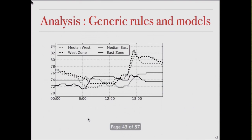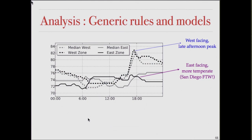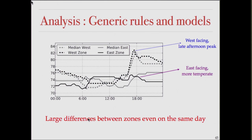A lot of rules and models are expected to work across different buildings and climates, but if you actually look at even one building — the CSE building — the east-facing rooms and the west-facing rooms are very different. The west-facing rooms have a large temperature peak in the afternoons, but the east-facing rooms are fairly temperate. So it's unrealistic to expect a single rule or threshold to work across two different rooms in the same building, and you want something much more adaptive to the actual data.